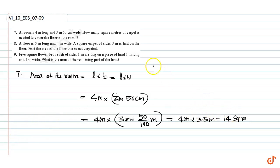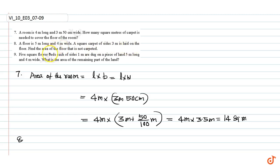So 14 square meters of carpet is needed to cover the floor of the room. Question number 8: a floor is 5 meters long and 4 meters wide. A square carpet of side 3 meters is laid on the floor. Find the area of the floor that is not carpeted.